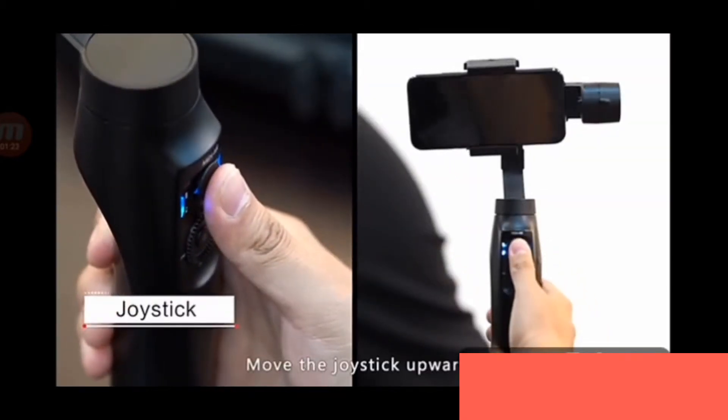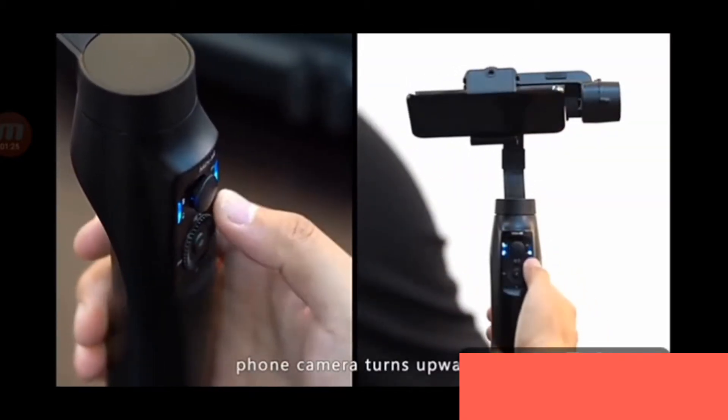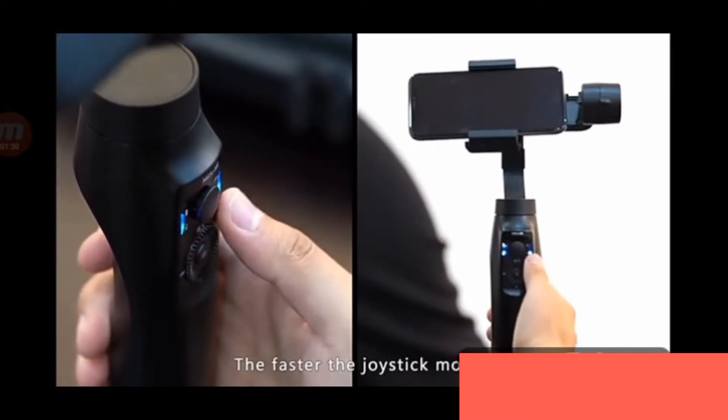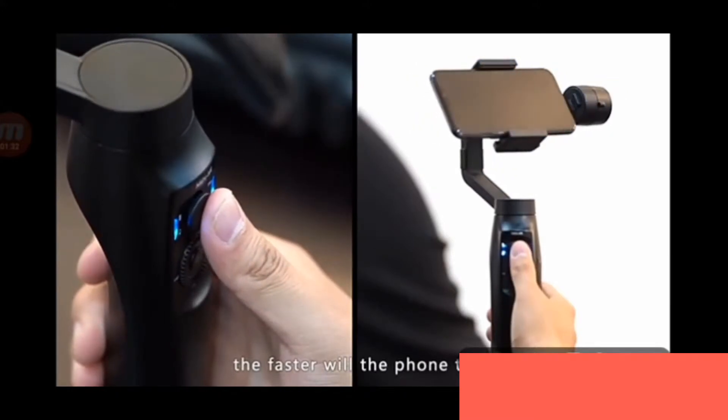Joystick: move the joystick upwards, the camera tilts upwards. Move the joystick downwards, the camera tilts downwards. The tilting speed depends on how fast you move the joystick.